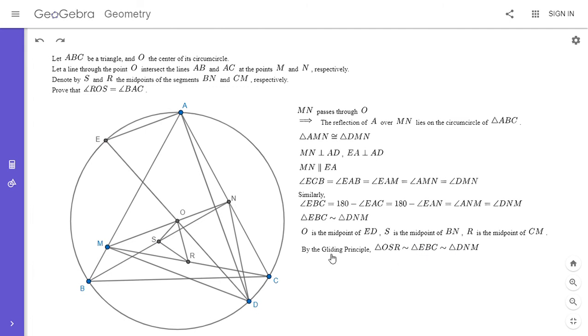I feel like this is probably the key step in the problem. From there it's easy to finish it off, because then angle ROS has to be equal to angle CEB, and angle CEB is equal to angle BAC.